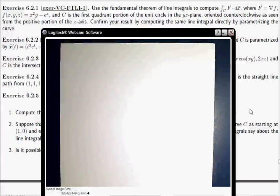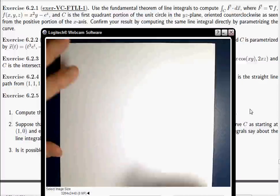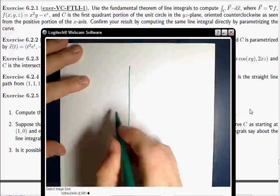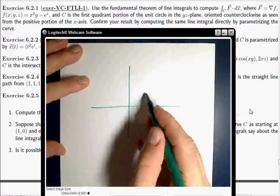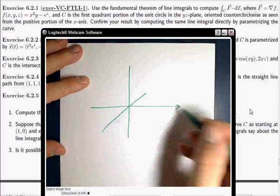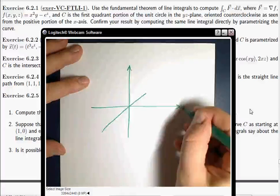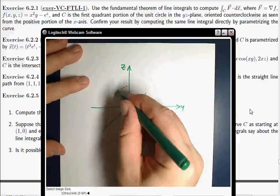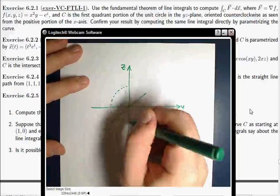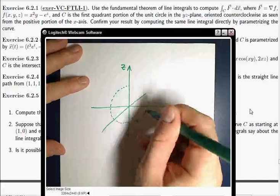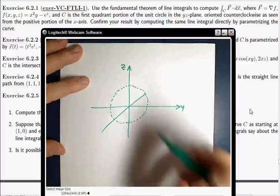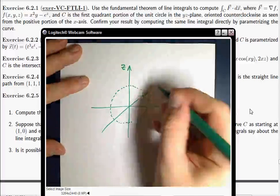Okay, so let's draw our picture. The domain here is, now this is a problem in 3-space, and C is the part of the unit circle in the YZ plane. So let's draw the unit circle in the YZ plane. YZ. And the unit circle in the YZ plane goes around like this. Cool.